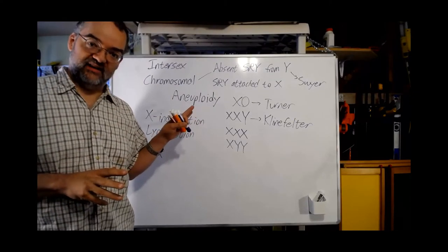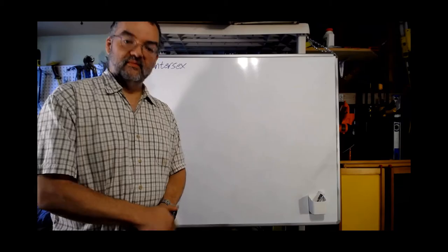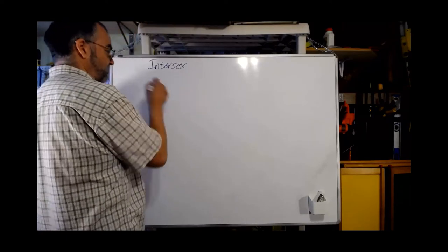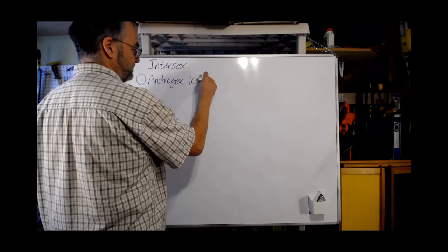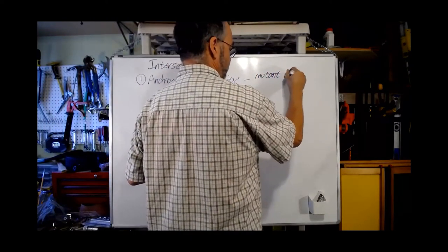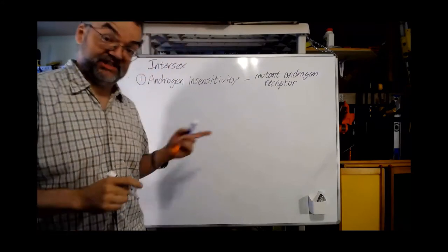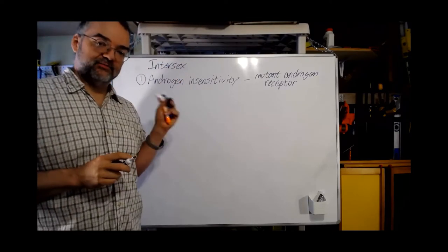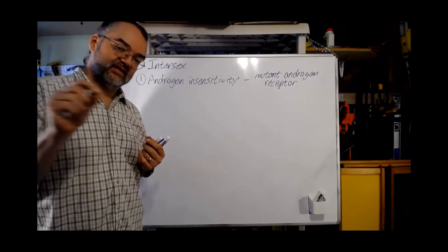Now let's go through some other intersex conditions at levels higher than chromosomal. Let's talk about a couple more. The first one is androgen insensitivity — a condition where you have a mutant androgen receptor. Androgen refers to testosterone and dihydrotestosterone, both of which use the same receptor.